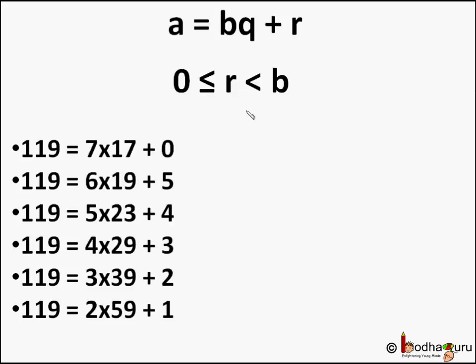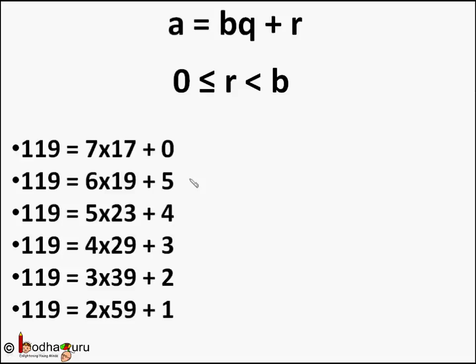For a particular value of a and b, q and r are fixed. No matter how many times you divide 119 by 6, you will always get quotient as 19 and remainder as 5 — the same q and r for the same values of a and b.